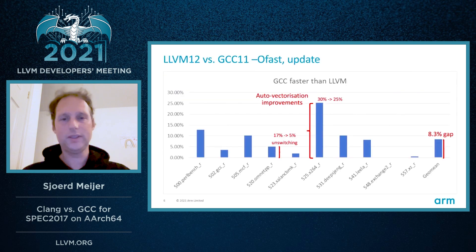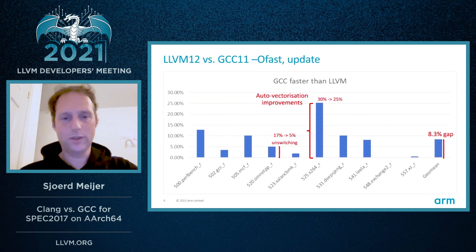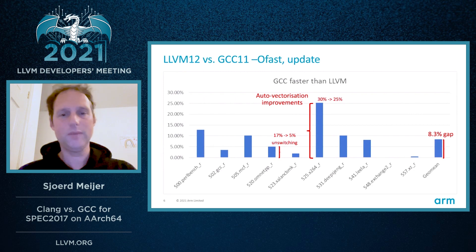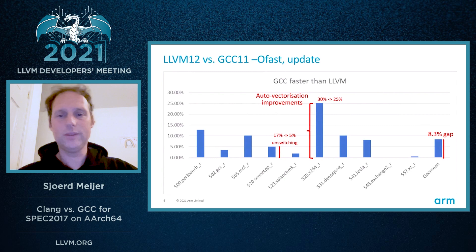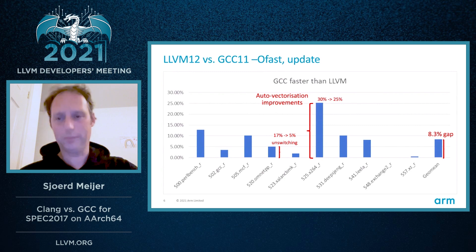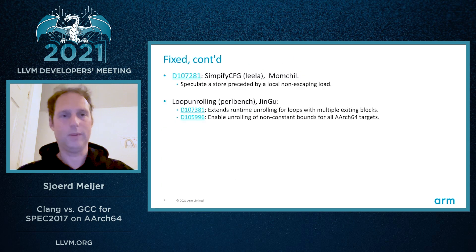With those improvements committed, the situation looked a lot better. Big improvements in OmnetPP — it went down from 17% behind to 5%. And we got around a 5% improvement in X264. The result was that we were now 8.3% behind in geomean, compared to 10% before.